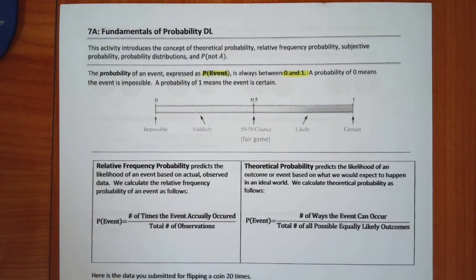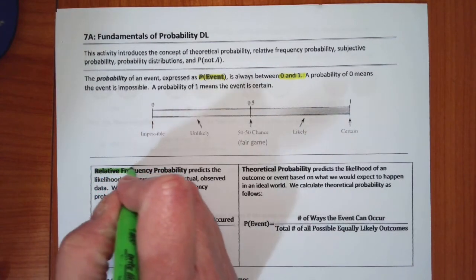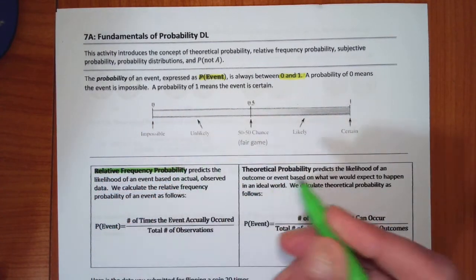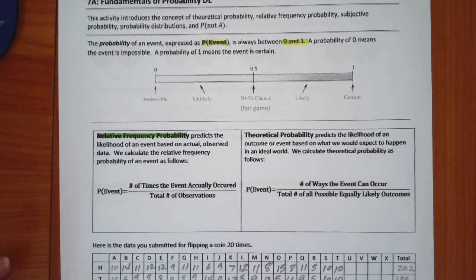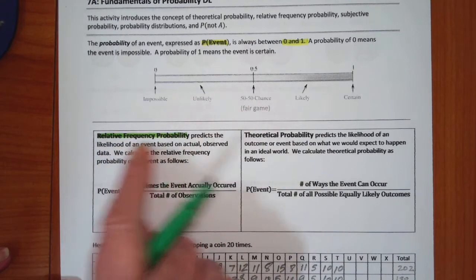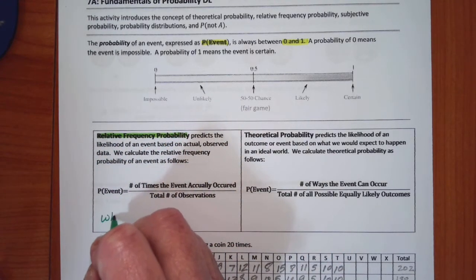The data you provided on your test last time deals with what we call relative frequency probability. Relative frequency probability predicts what's going to happen based on actual observed data. I like to summarize that by saying: relative frequency probability is what actually happened.